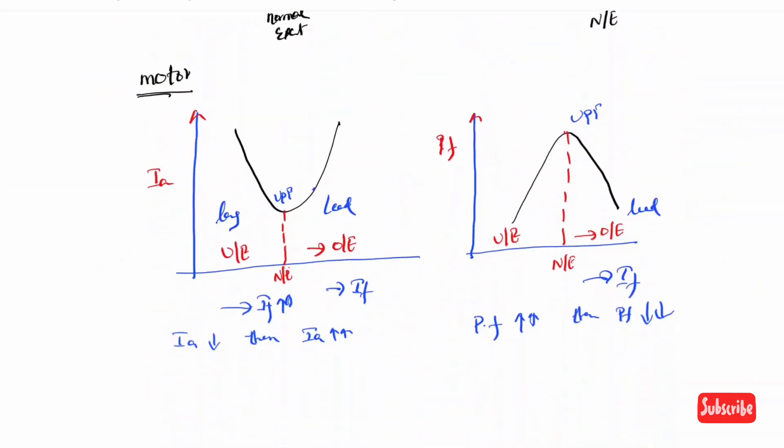To understand this in more depth: if the motor is operating at leading power factor initially, the starting point would be here. As If increases, armature current behaves according to the curve - first decreasing, then increasing. The same logic applies from different starting points.